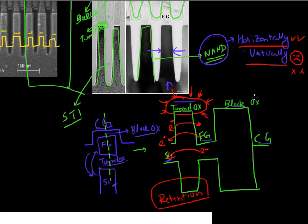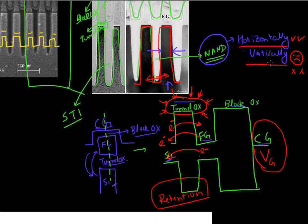If you can't scale the tunnel oxide, you can't scale the cell vertically. You probably can't scale the voltage applied on your control gate to program and erase your cell. If you can't scale that, then you can't also scale the STI height. Because if you have the same voltage, you need this STI to be a certain height to provide isolation between two adjacent cells. So it has not been possible to scale this cell vertically. But we can continue scaling by just horizontally scaling the cells. As long as you can keep scaling horizontally, you can still keep reducing your cost per bit.